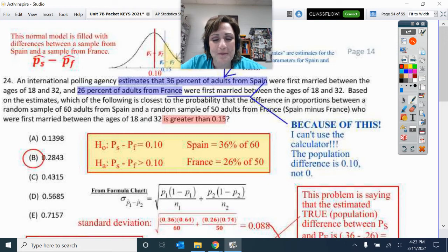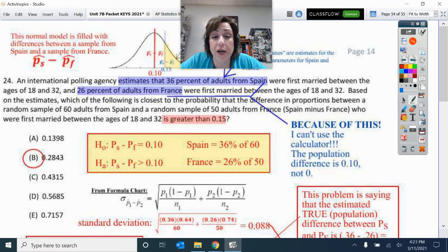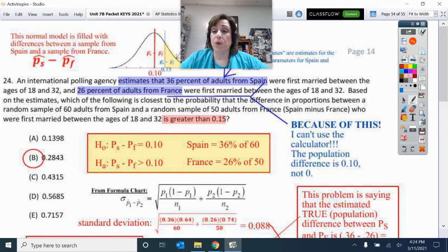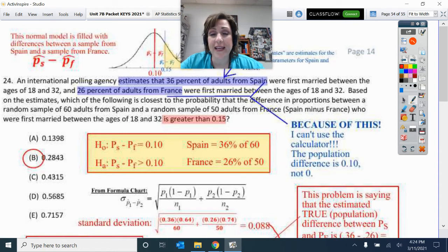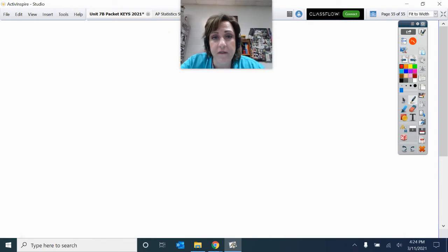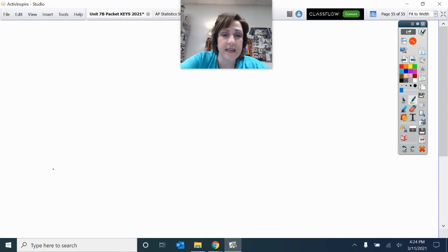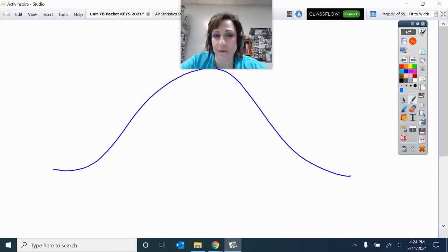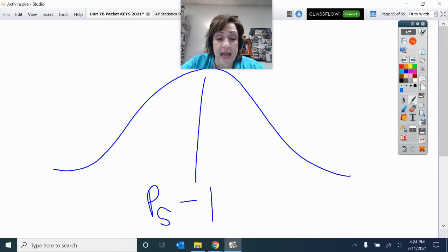Next. This is a great problem. This one really made me stop and think because we're so much into - and I've only really taught you to do our two-proportion Z tests with the calculator. So let's talk about what's happening. This problem really makes sense if we think of a picture. Thinking of a picture makes such a big difference. This problem is about the marriage rate in Spain and how different it is from the marriage rate in France.